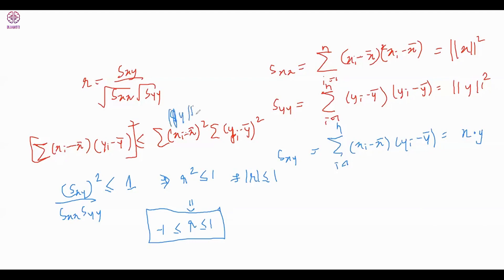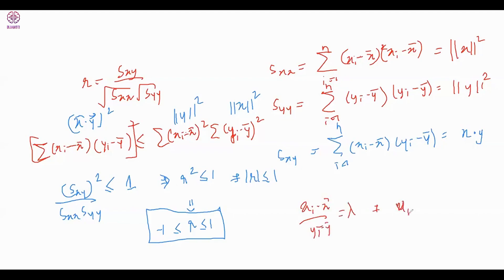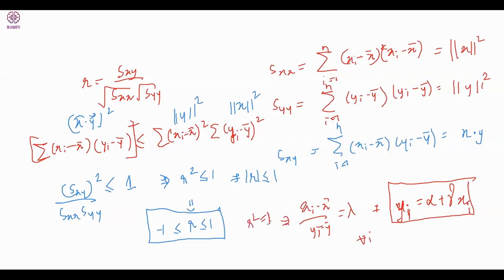Equality holds — r² = 1 — if and only if the Cauchy-Schwarz equality condition holds, meaning (xᵢ − x̄) / (yᵢ − ȳ) = constant λ for all i. That means yᵢ is actually a linear function of xᵢ: yᵢ = α + γxᵢ. So r = ±1 if and only if y and x have a perfect linear relationship.